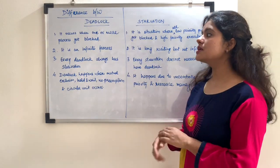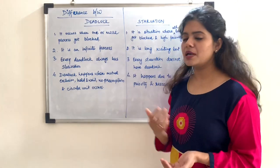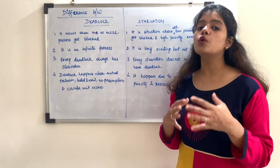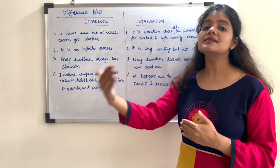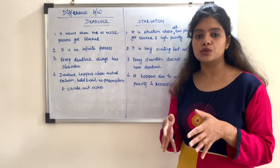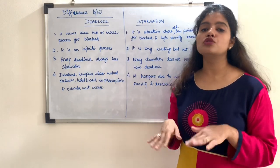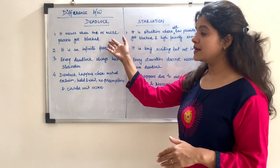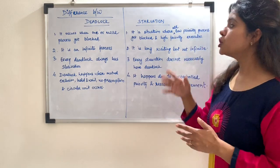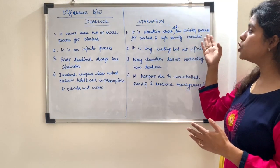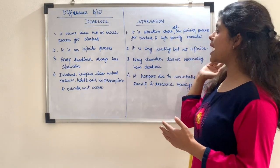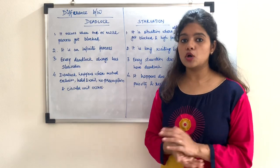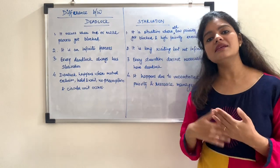The first difference is that deadlock occurs when one or more processes get blocked. As we have studied in previous videos, this happens when one or more processes get blocked, meaning they don't perform their execution. So deadlock is such a situation. If we talk about starvation, starvation is a situation where all the low priority processes get blocked while high priority processes execute. We cannot say that all processes are blocked in starvation.